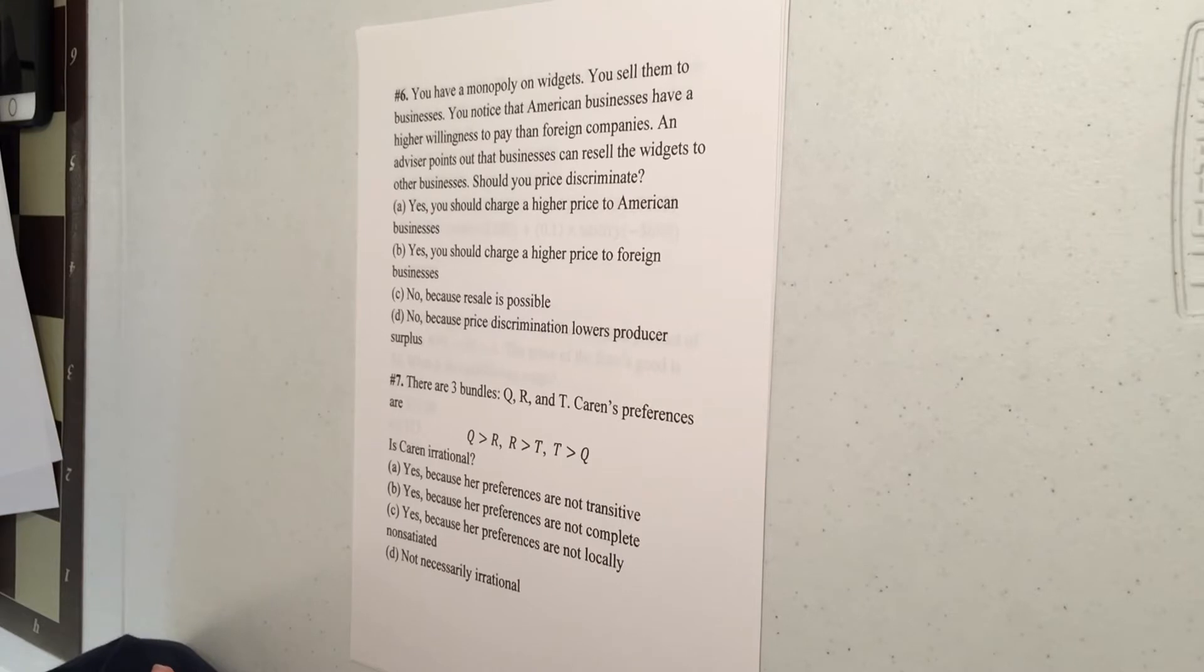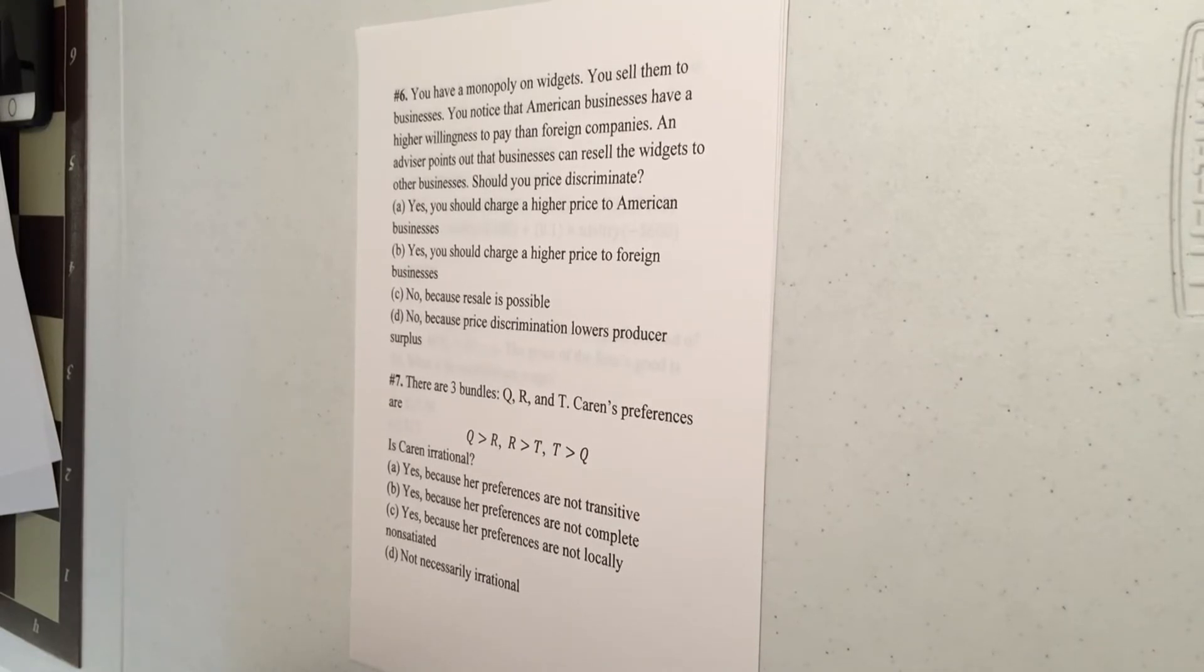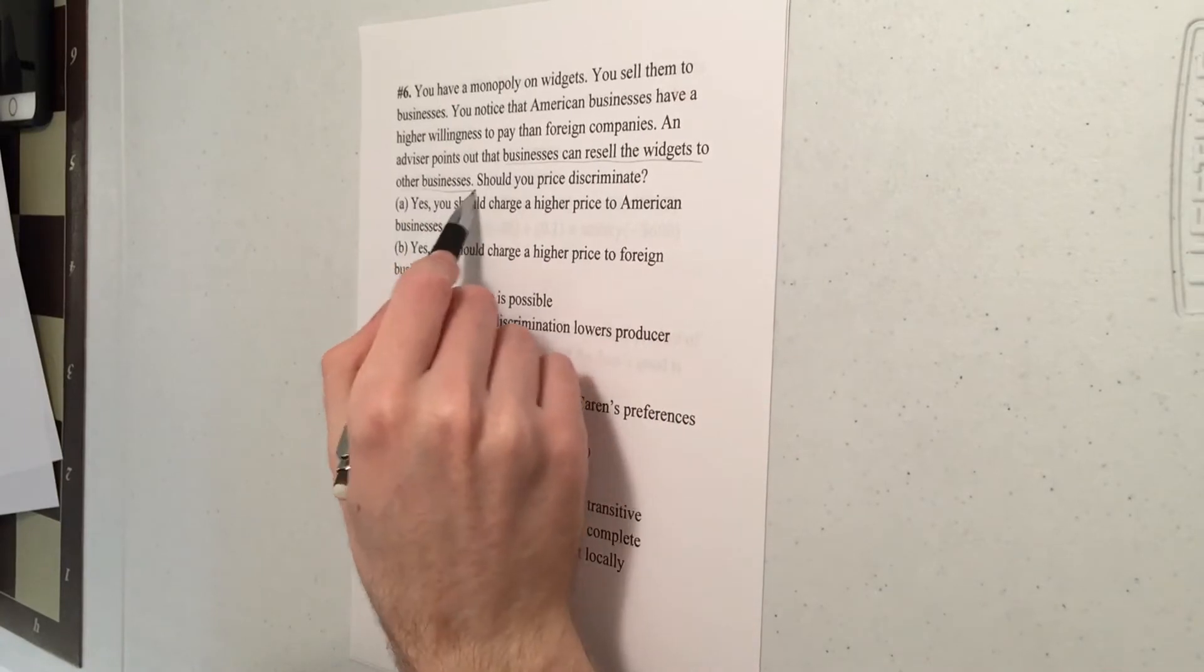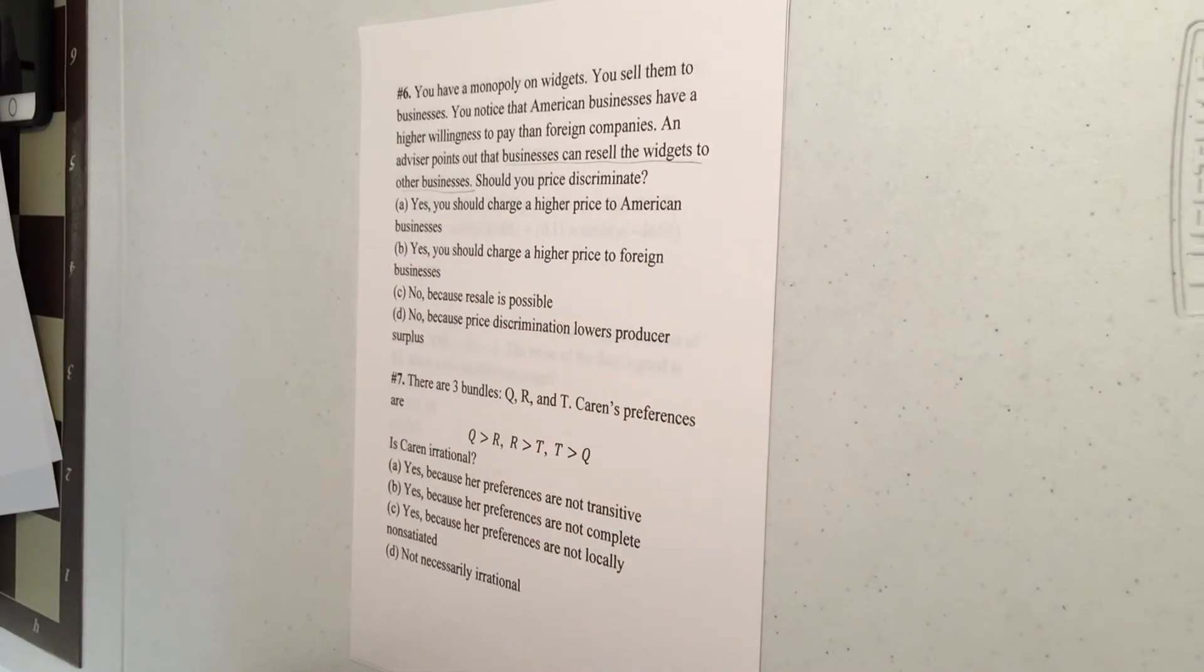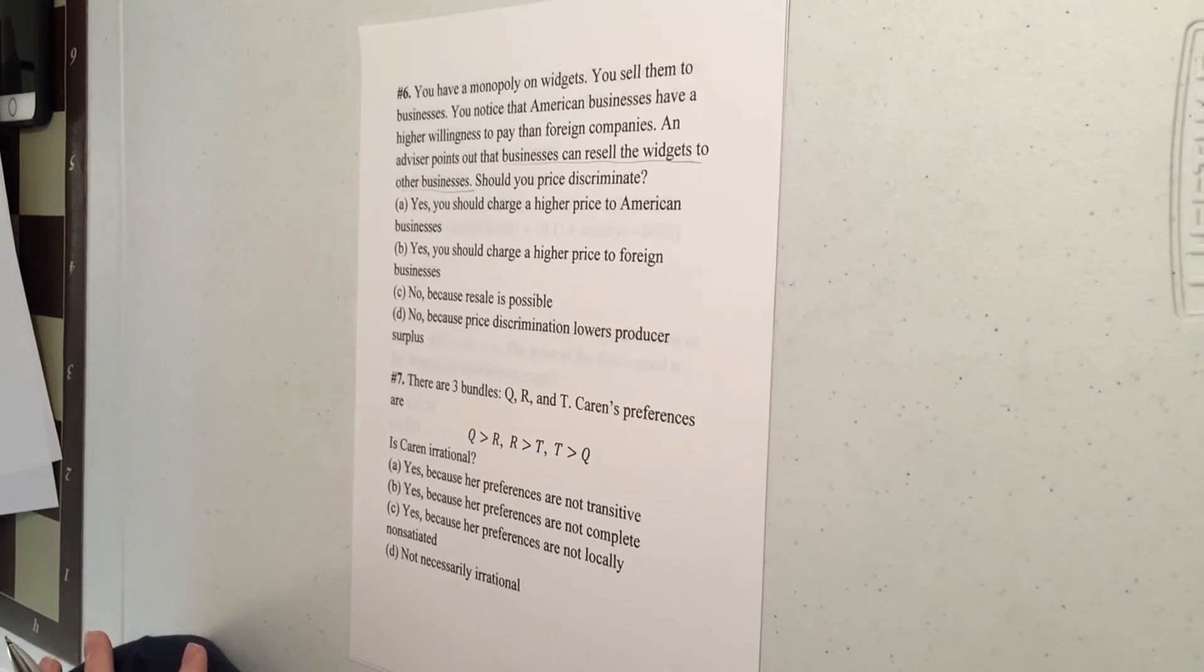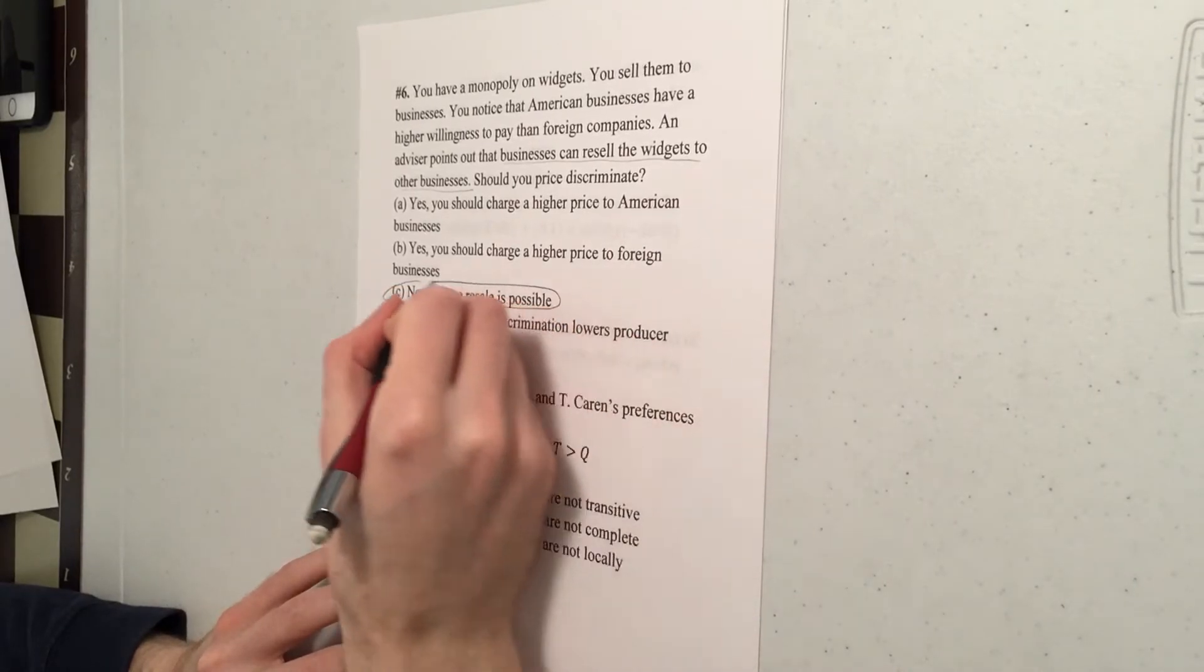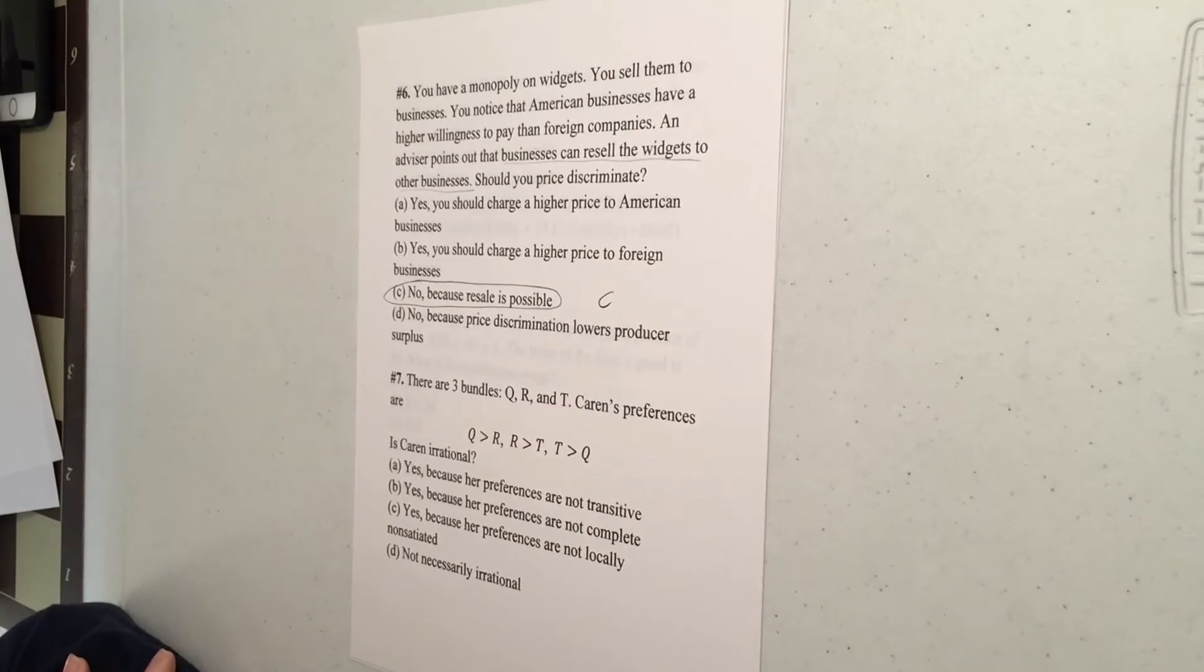Number six. Another question about price discrimination. So we have a monopoly on widgets. We can sell them to American firms or to foreign firms. So we have market power. That's one of the conditions. And we can distinguish different groups of customers. That's our condition for having price discrimination be a possibility. However, firms can resell the widgets to other businesses. That's a problem. So we said one of our conditions for price discrimination is no resale. Otherwise, the people who pay a low price could buy extra units and then resell them to the folks who'd be paying a higher price. As a result, you'll never sell goods for the higher price. The answer here would be no because resale is possible. So that's choice C.